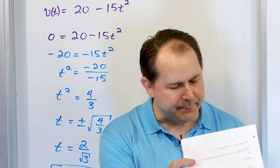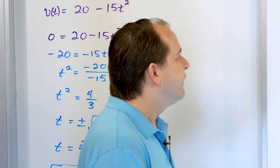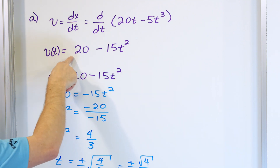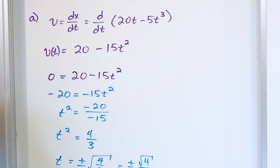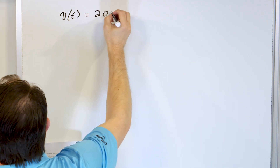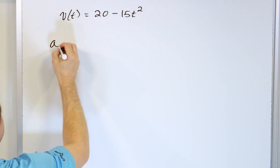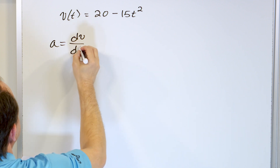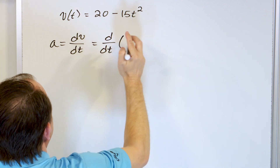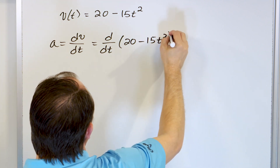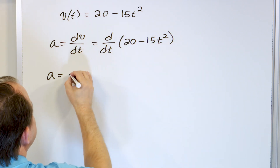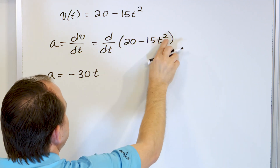For Part B — when is the acceleration zero? — we take the derivative of the velocity to get the acceleration. The velocity is v(t) = 20 - 15t². The acceleration is a = dv/dt = d/dt(20 - 15t²). The derivative of the constant 20 is zero, and 2 × (-15) = -30, with the exponent reduced by 1. So a(t) = -30t.